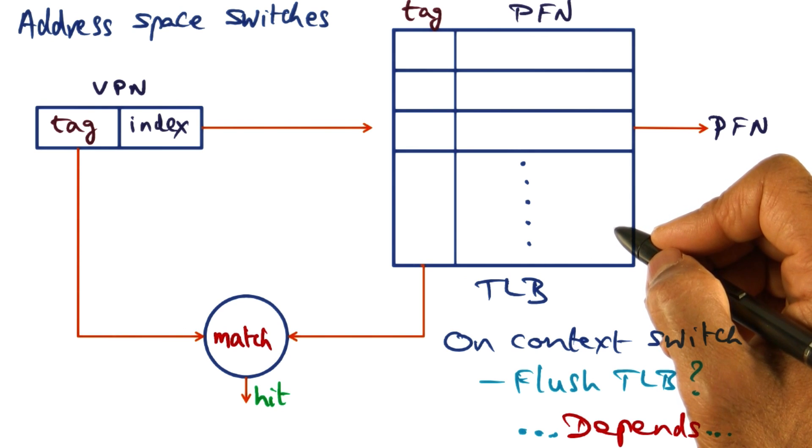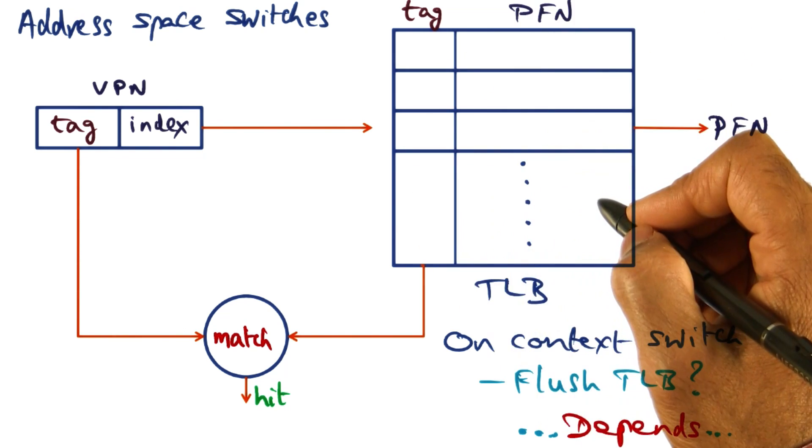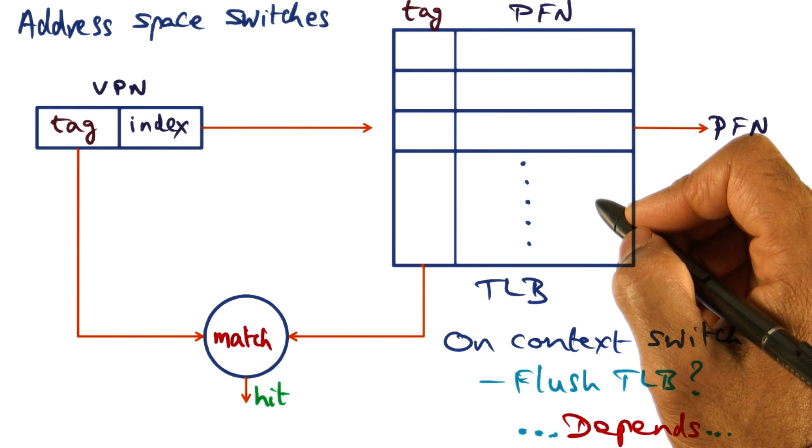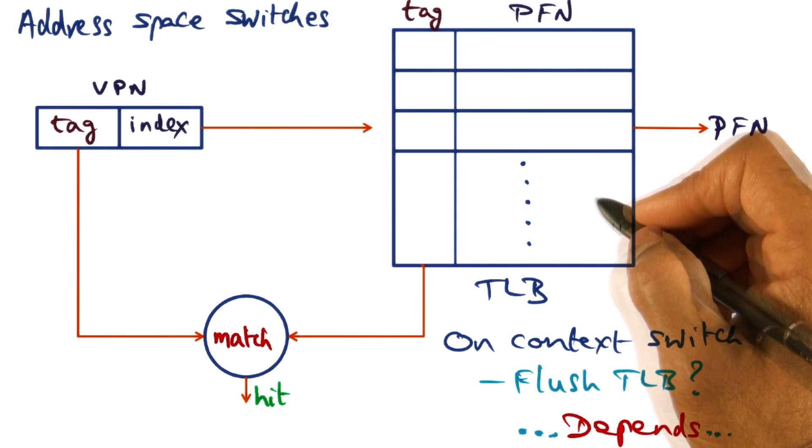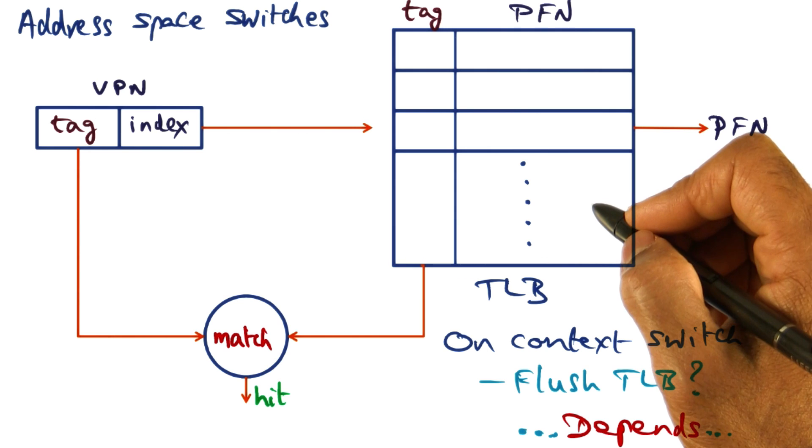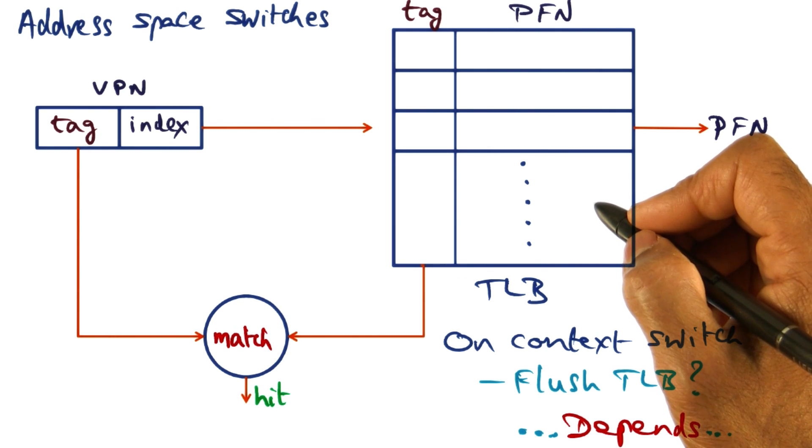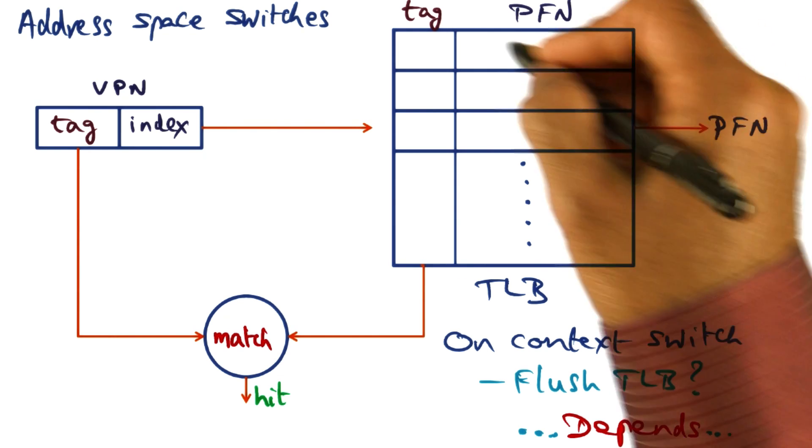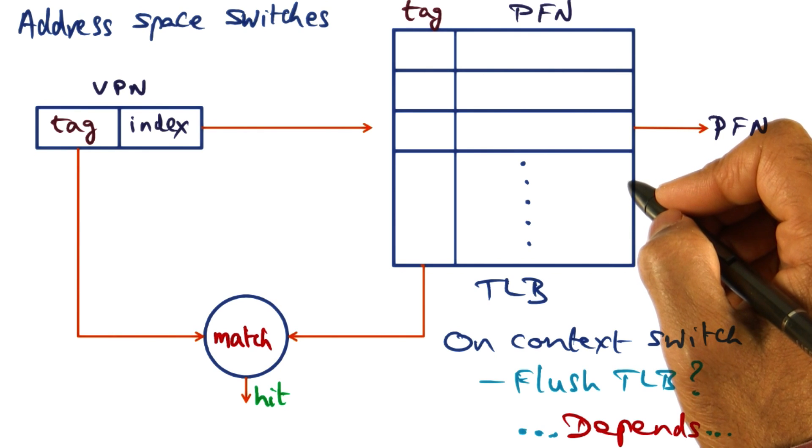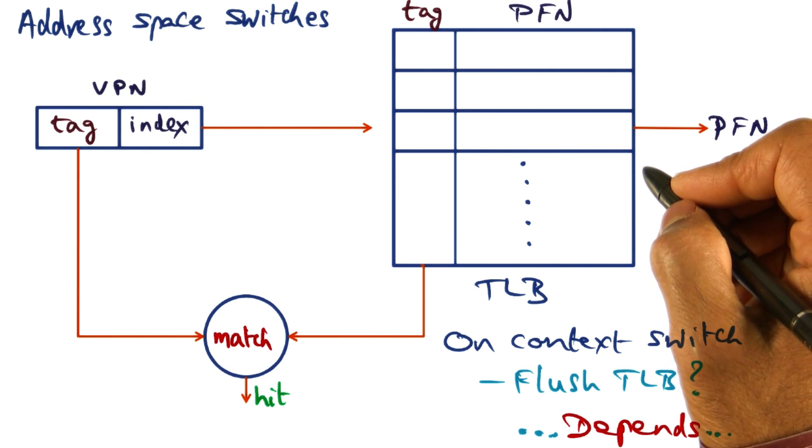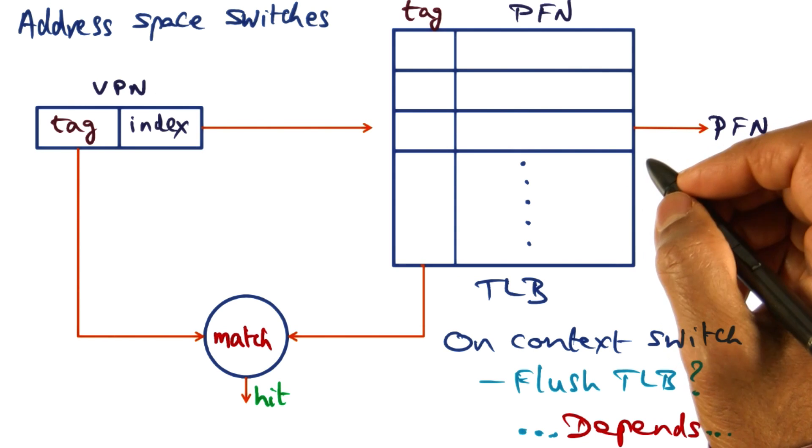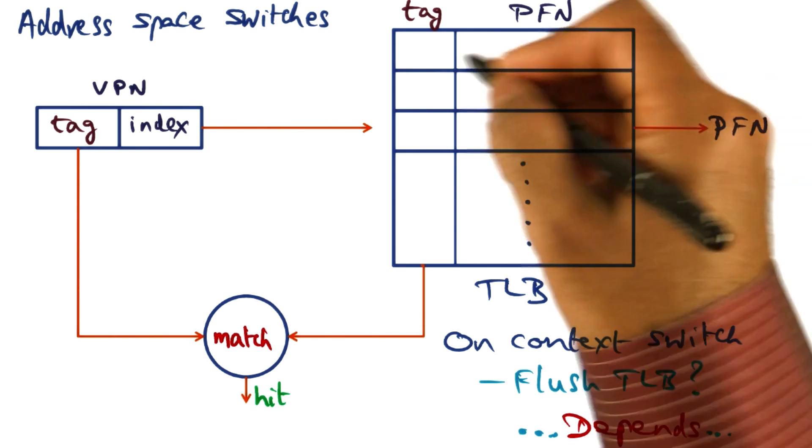In the Intel architecture, actually, the TLB is split into two parts, a user part and a kernel part. And the kernel part is common regardless of which process is running. And therefore, you don't have to flush that portion of the TLB, the kernel portion of the TLB. But the user portion of the TLB has to be flushed on a context switch because the virtual address to physical address mapping is going to be different for the new process that starts to run on the processor.